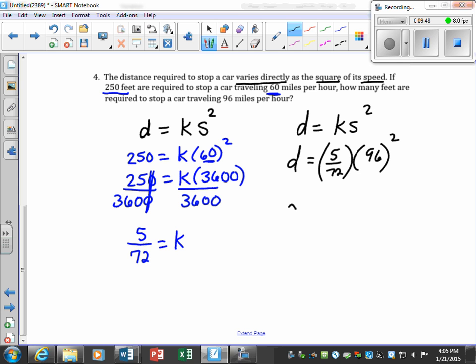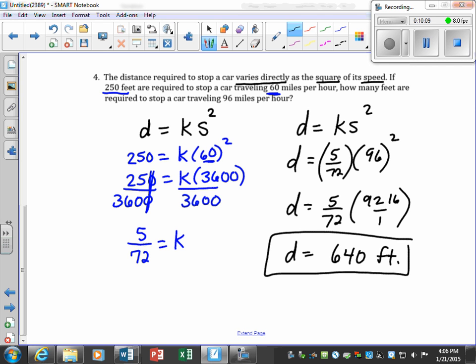So our distance is going to be 5 over 72 times 96 times 96 is 9,216. Now, I could just put this in my calculator. 5 times this over, and then divide it by 72, and it should simplify to 640 feet. And that's going to be your distance.